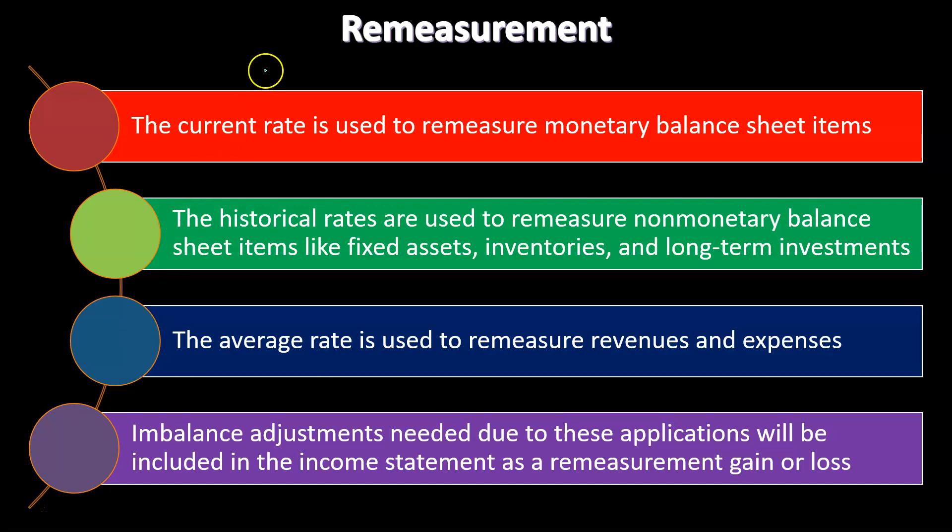Because three different rates are used during remeasurement, the restated financial statements will be out of balance. The imbalance adjustment required due to these differing rate applications will be included in the income statement as a remeasurement gain or loss — it is labeled as such and recorded on the income statement.